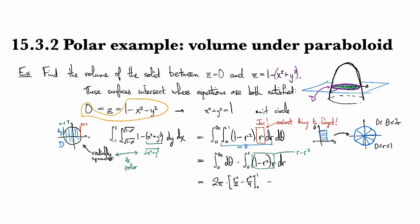So that gives us, let's see, 1 half minus 1 fourth, which is 1 fourth. So we have 2 pi over 4, or pi over 2. There's our answer. That's the volume underneath the paraboloid.